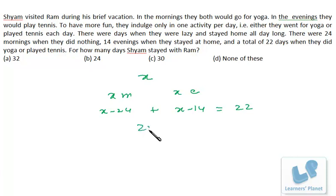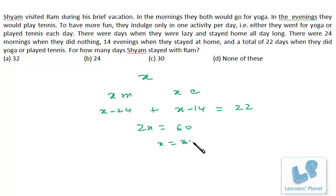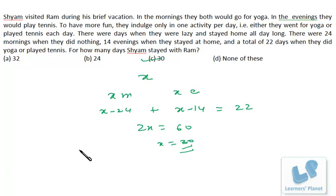Since they did only one activity per day, total mornings plus evenings = 2X = 24 + 14 + 22 = 60. Therefore X = 30. Shyam stayed with Ram for 30 days. It's a very simple yet interesting problem.